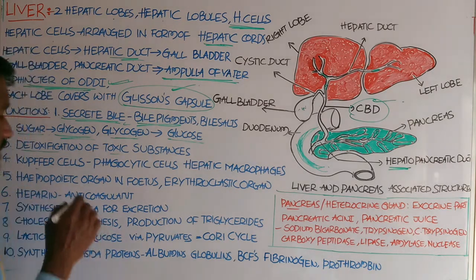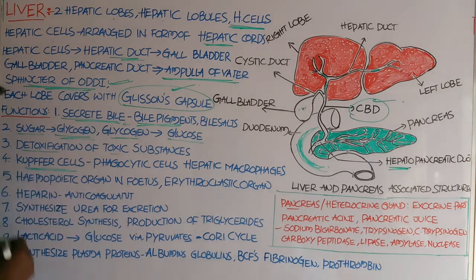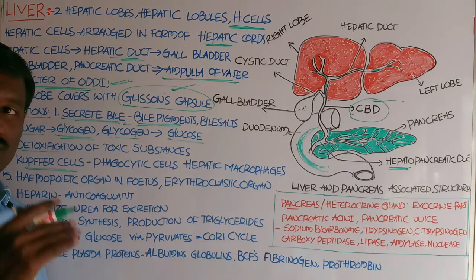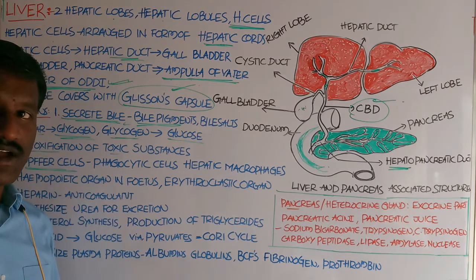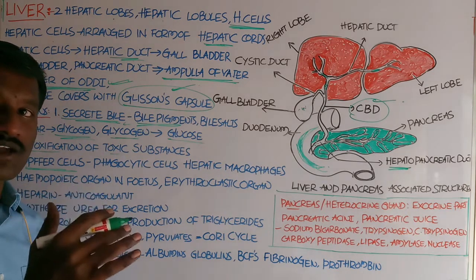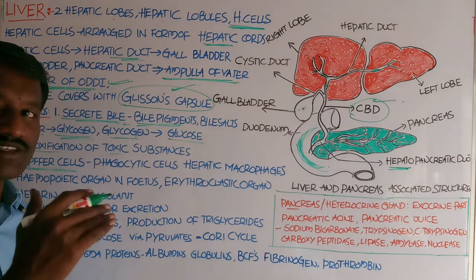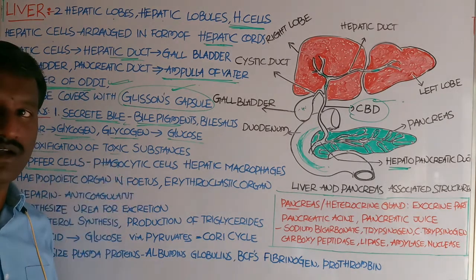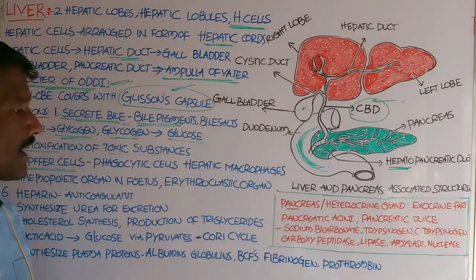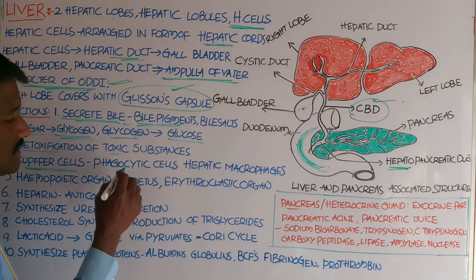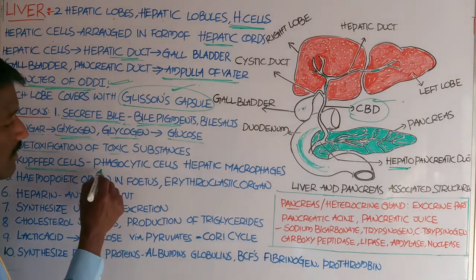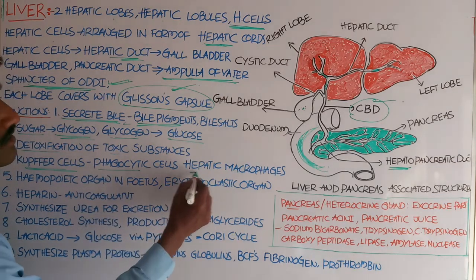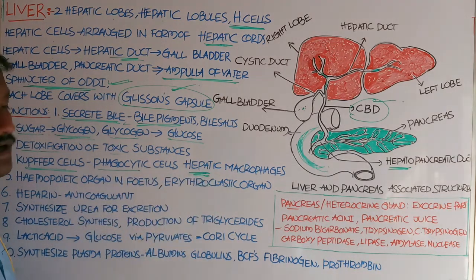Kupffer cells are also present in the liver. These Kupffer cells act as hepatic macrophages because they engulf microorganisms such as bacteria and viruses. They are therefore called phagocytic cells, also known as hepatic macrophages.